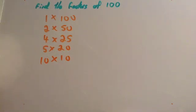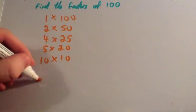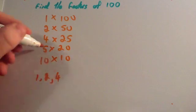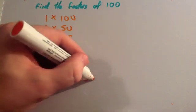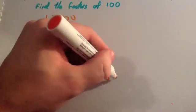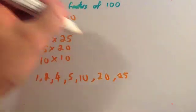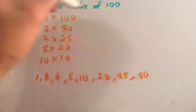So the factors of 100 are 1, 2, 4, 5, 10, 20, 25, 50, and 100.